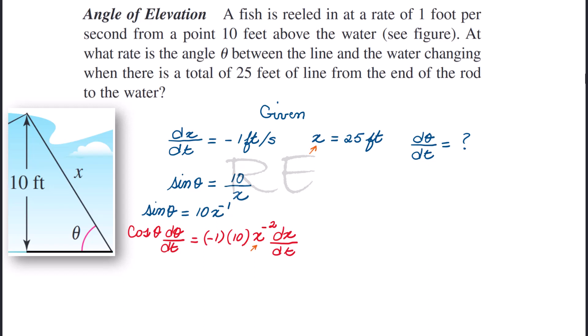We have a particular x, that's 25 feet. dx/dt is given, that's negative 1 foot per second. We're being asked dθ/dt, and we do not know cosine theta.